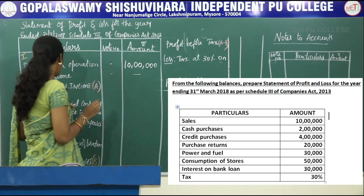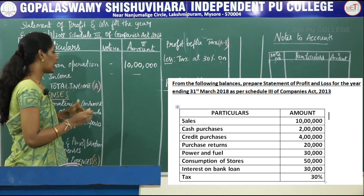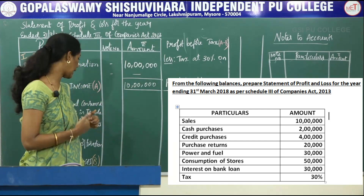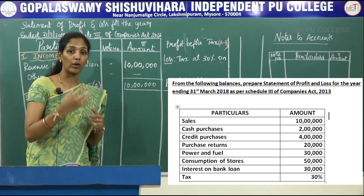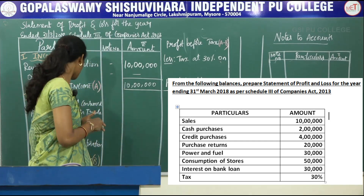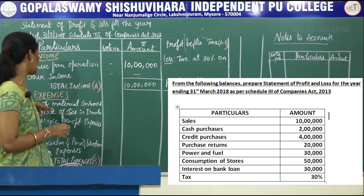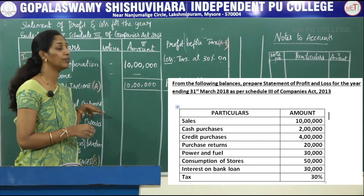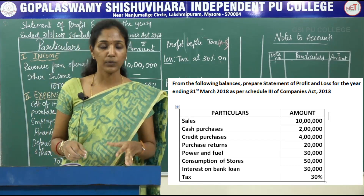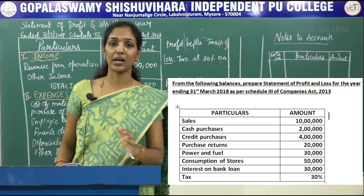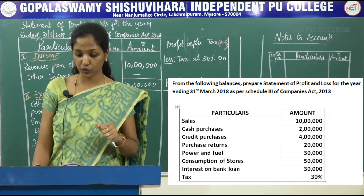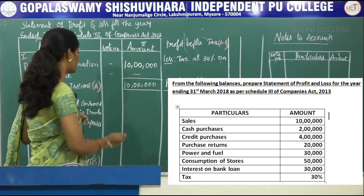Other income — leave it as blank as there is no other income in this problem. The total income of the company will become 10 lakh. Coming to the expenses, you have to record each and every expense given in your problem. The first expense in the format is cost of material consumed. In your present problem, they have given consumption of stores, which is also considered as cost of material consumed. The amount is rupees 50,000.